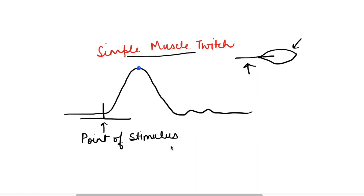If we see this record, this is showing the point of stimulus — that is the time when the nerve is stimulated. Then there is some time which the muscle takes to start contracting. This upward phase is showing the contraction, and this downward phase is showing the relaxation of the muscle.